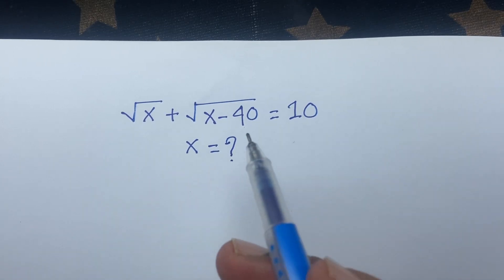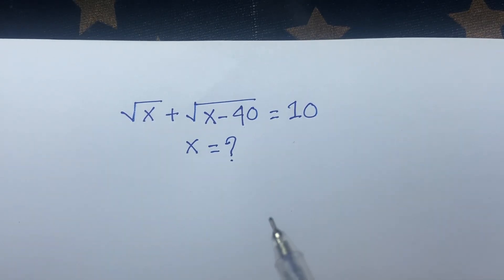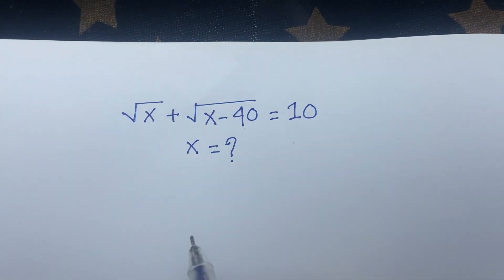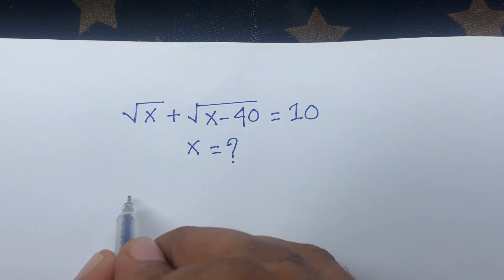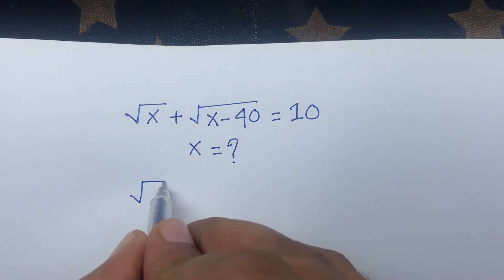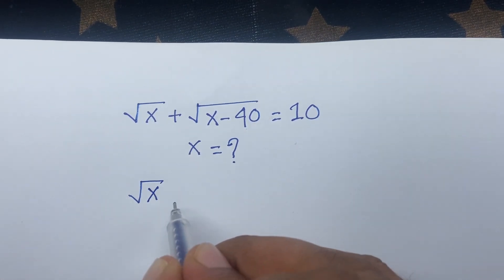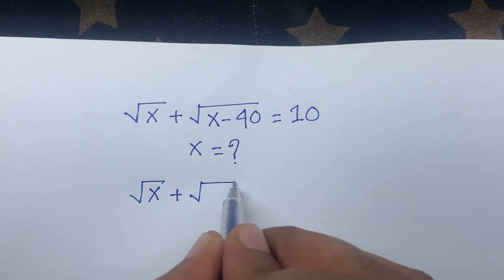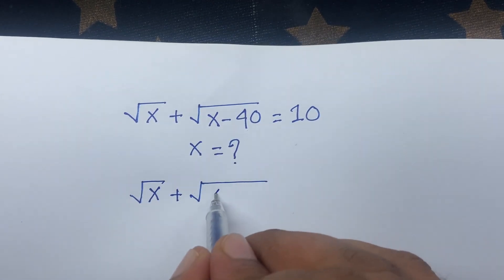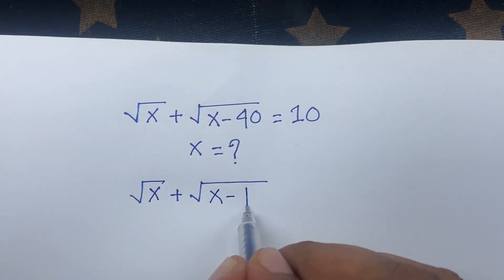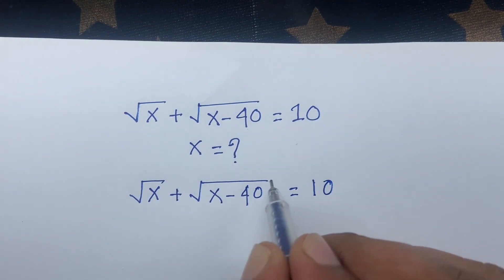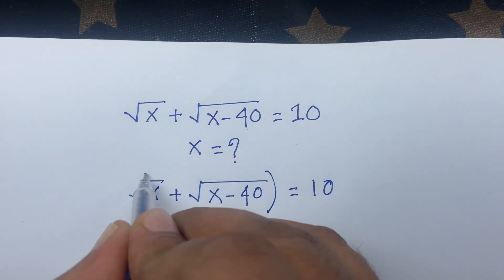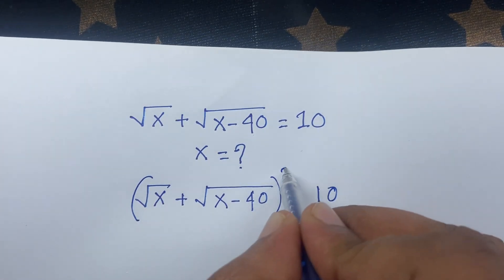Square root x plus square root x minus 40 is equal to 10. We'll find out what is the value of x in this question. I will use both sides whole square.